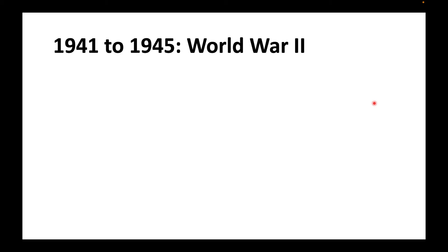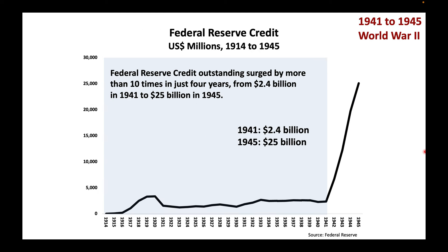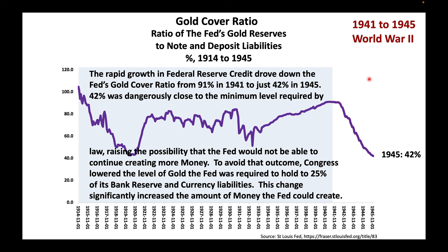During World War II, to help finance the war, the Fed created money by extending Federal Reserve credit on a much larger scale than it had even during World War I. The largest increase in Federal Reserve credit during the war was $7.5 billion in 1943, versus a peak of just $1.4 billion in 1918. Federal Reserve credit outstanding surged by more than 10 times in just four years, from $2.4 billion in 1941 to $25 billion in 1945. The rapid growth in Federal Reserve credit drove down the Fed's gold cover ratio from 91% in 1941 to just 42% in 1945.